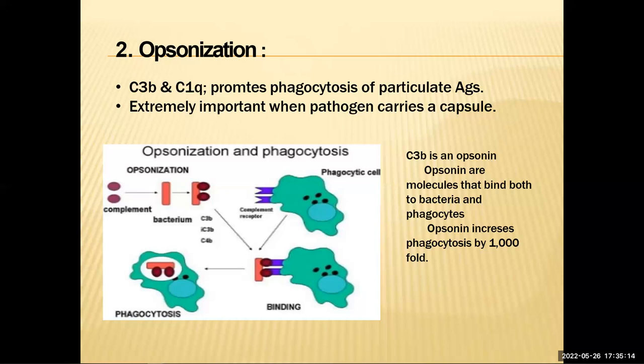Opsonins tag these bacteria for destruction, and then the phagocytic cell comes in and binds with its receptor to the complement molecules — in this case the C3B and C4B proteins — which have been bound to the bacterium, targeting it for destruction.